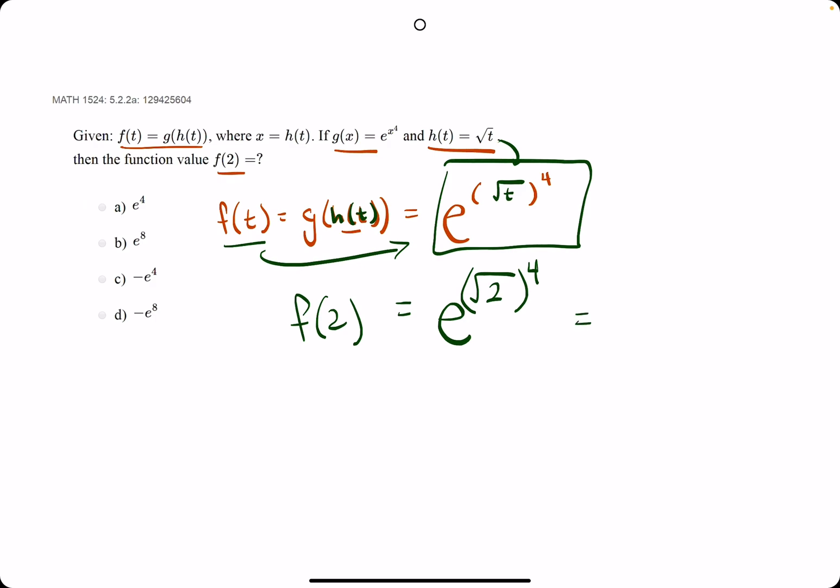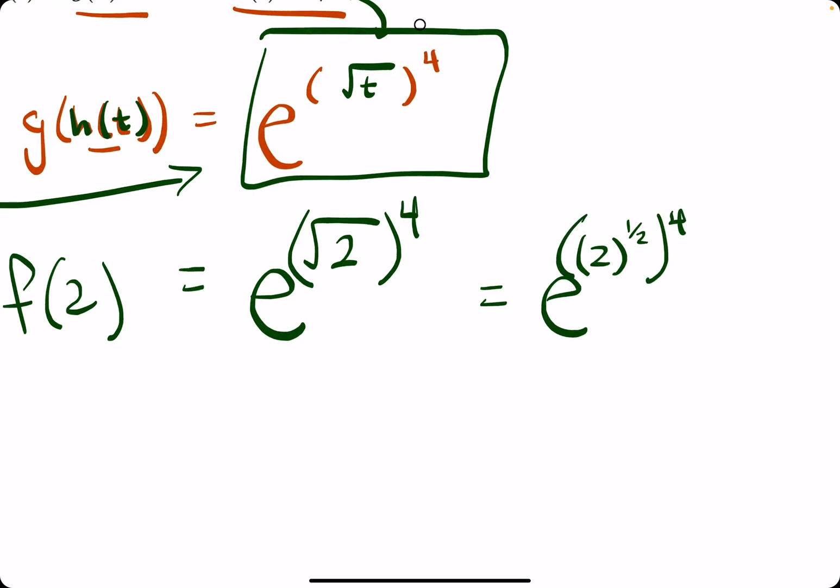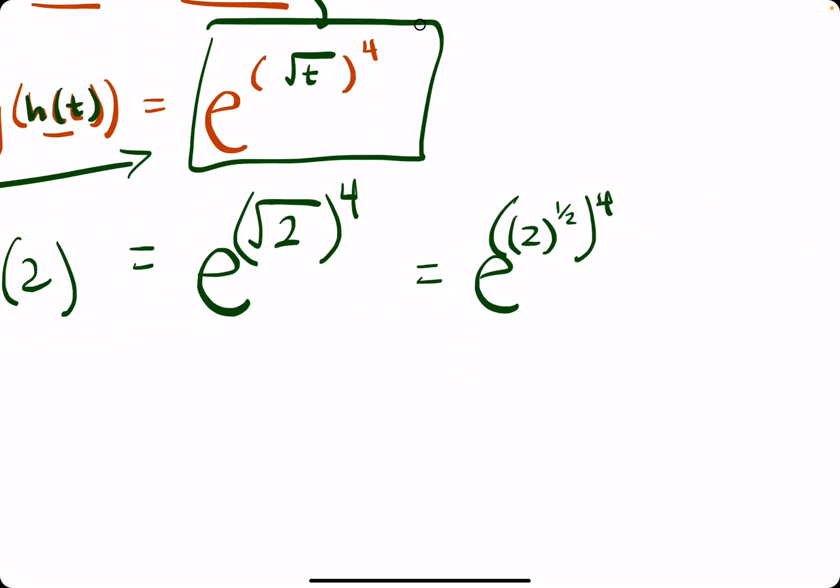So let's simplify this a little bit. The square root of 2 can be rewritten as 2 to the one-half power, but then all of that is being raised to the fourth. So then we have a one-half next to a 4 in the exponent's place, which allows us to then multiply those two exponents.